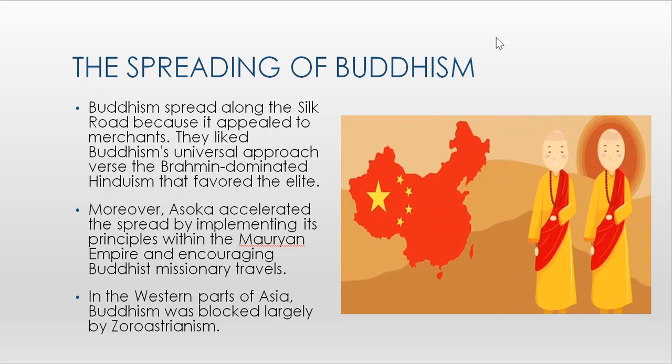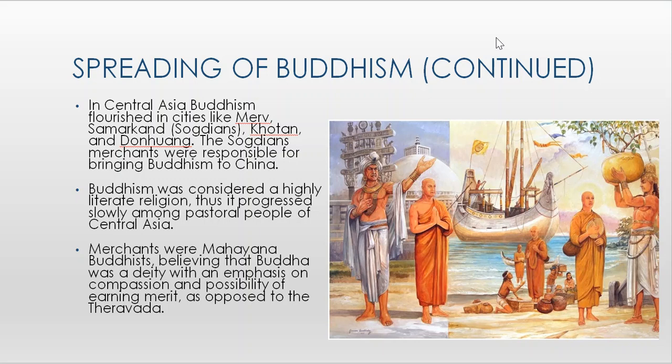Along the Silk Road, Buddhism spread because it appealed to merchants — they liked Buddhism's universal approach versus the Brahmin-dominated Hinduism that favored the elite in India. Moreover, Ashoka accelerated the spread by implementing Buddhist principles within the Mauryan Empire and encouraging missionary travels in western Asia. Buddhism was largely blocked from spreading westward by Zoroastrianism — people in those regions were unwilling to accept it.